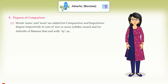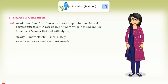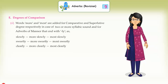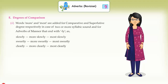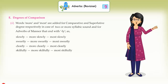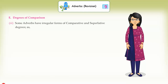(2) The words 'more' and 'most' are added for the comparative and superlative degree respectively in the case of two or more syllable adverbs, and for adverbs of manner that end with '-ly'. Examples: slowly → more slowly → most slowly, sweetly → more sweetly → most sweetly, clearly → more clearly → most clearly, skillfully → more skillfully → most skillfully.